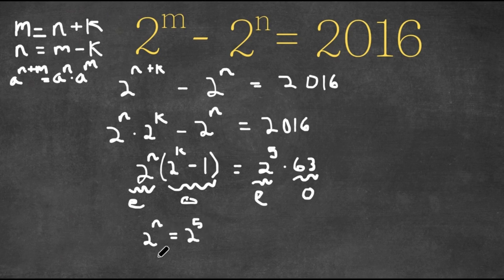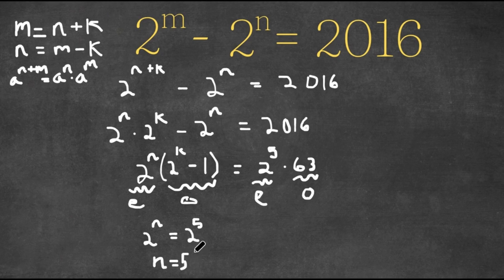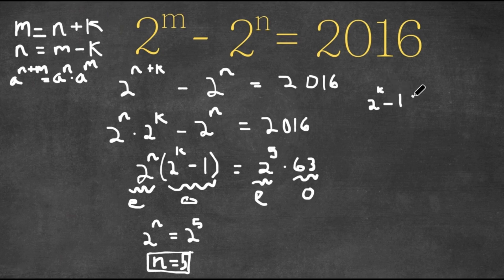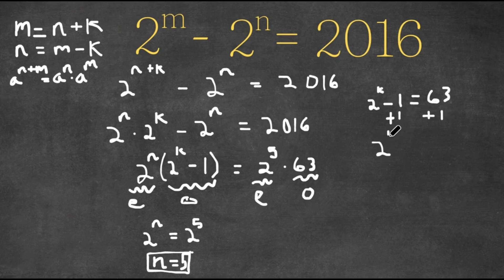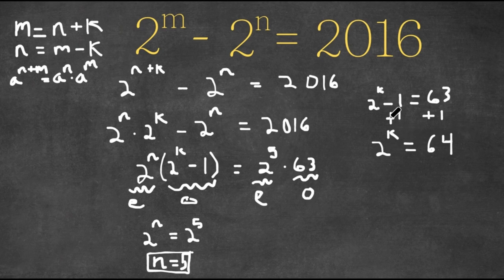And now what we're going to do is set the odds equal to each other. So 2 to the power of k minus 1 is equal to 63. If I add 1 on both sides, I get 2 to the power of k equals 64. What power of 2 equals 64? That's 2 to the power of 6. So k is equal to 6.